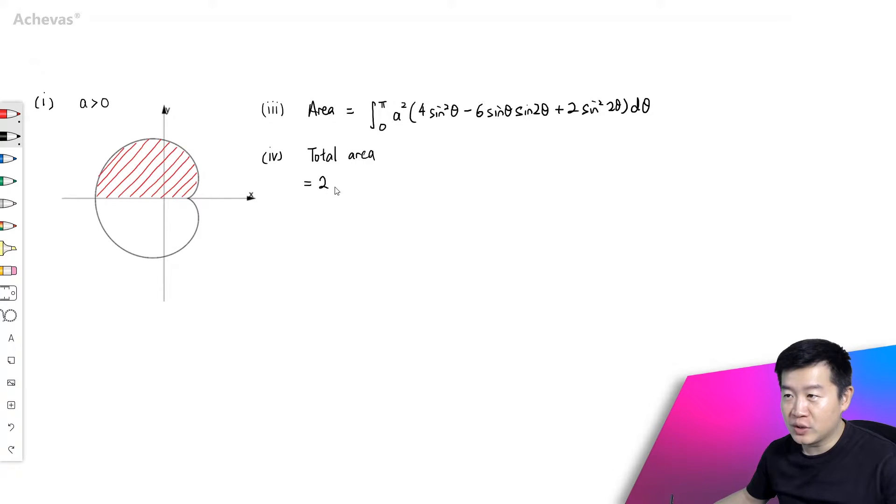So it is going to be 2 times integrating from 0 to π of a² times 4sin²θ minus 6 sine θ sine 2θ plus 2 sine square 2θ dθ.